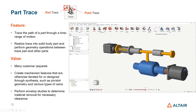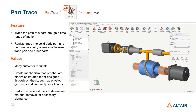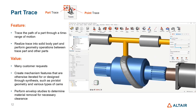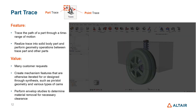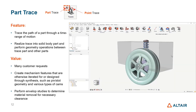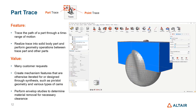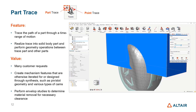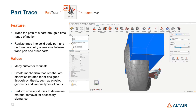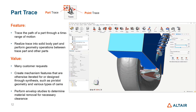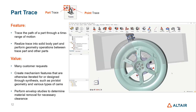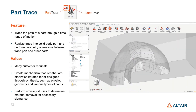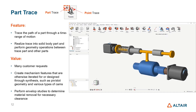We also have a new feature called Part Trace, which has been requested by customers — the ability to trace the sweep of a part through its range of motion. In the dialogue, you set the range of motion and control the quality of interpolation between frames. You don't need a lot of frames in the motion analysis to generate a good quality sweep because interpolation handles that automatically. The voxel size improves mesh quality, and with two parts selected you can choose Boolean operations like subtract to generate a clearance in the part.